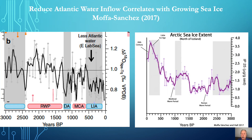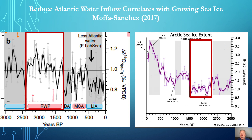On a larger time scale, Moffat and Sanchez's 2017 paper examined the relationship between changing inflows and sea ice cover over the past 3,000 years. Their two illustrations reverse the timelines, so red rectangles are used to show the same time periods. The panel on the left shows that during the Roman Warm Period, around 2,000 years ago, there were strong Atlantic inflows, and accordingly sea ice extent was very small.